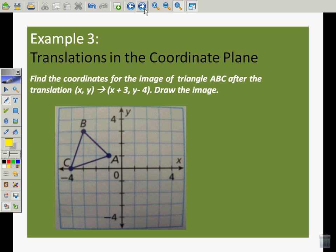We're going to find the coordinates for the image of triangle ABC after the translation x, y is x plus 3, y minus 4. We're doing that to each one of them. I'm adding 3 to x and subtract 4 from y. When I look at A, I am going to go forward 3: 1, 2, 3, and down 4: 1, 2, 3, 4. Here is my A prime. Over 3, down 4. Over 3 right, down 4.